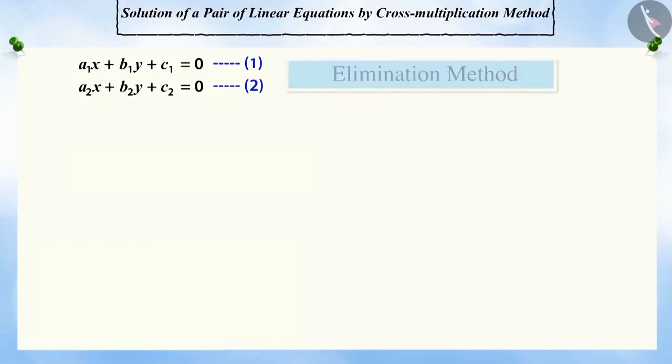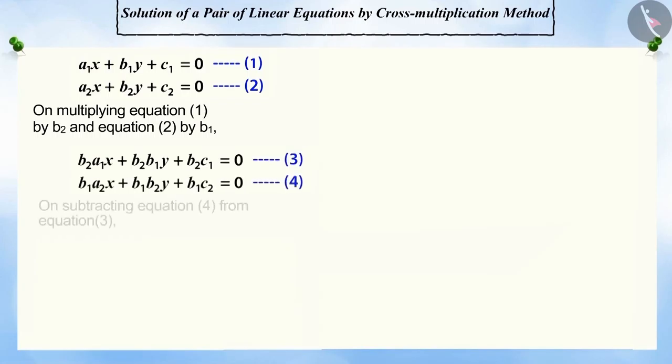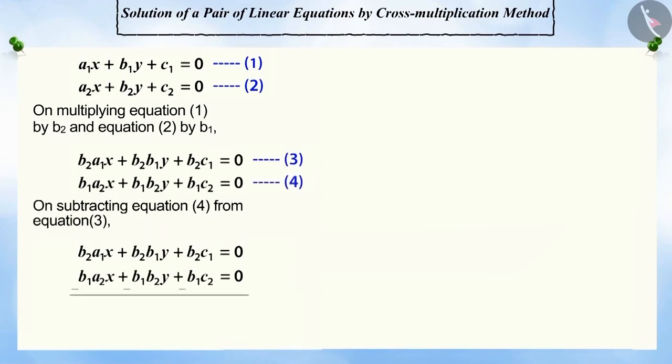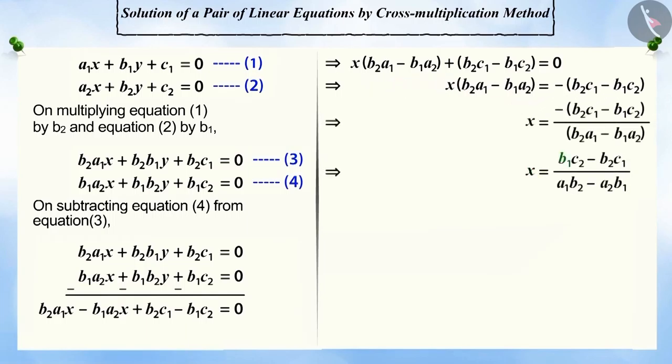Here, in order to eliminate variable y, we'll multiply equation 1 by b2 and equation 2 by b1, which gives us equations 3 and 4. On subtracting equation 4 from 3, we get x equals b1 c2 minus b2 c1 divided by a1 b2 minus a2 b1, where a1 b2 minus a2 b1 is not equal to 0.